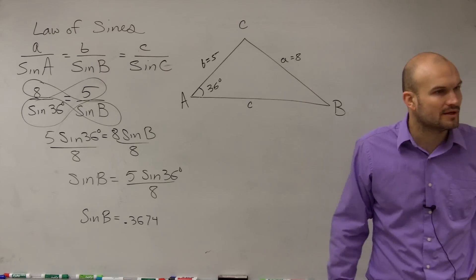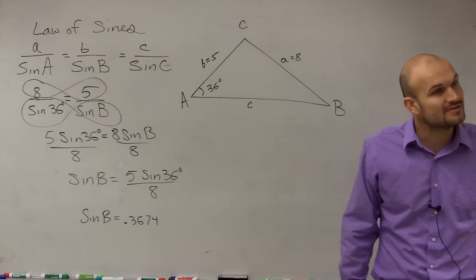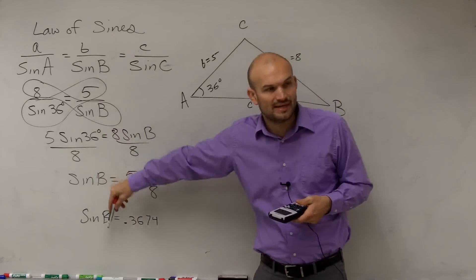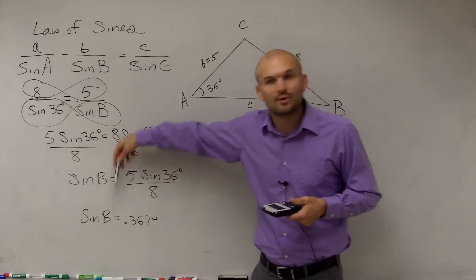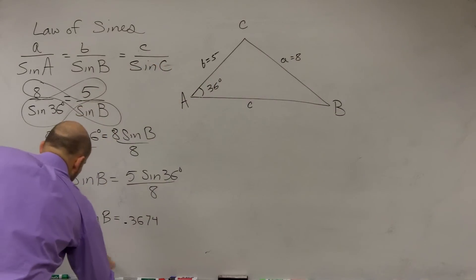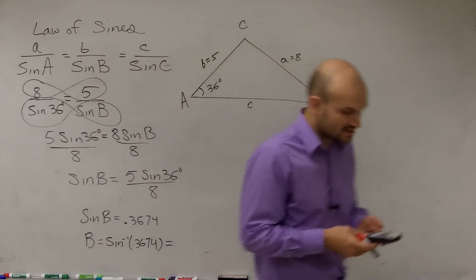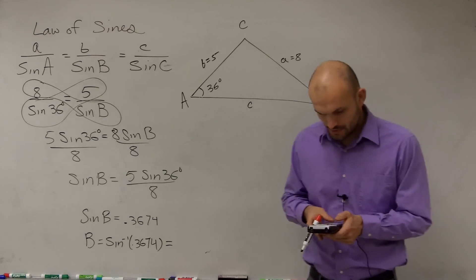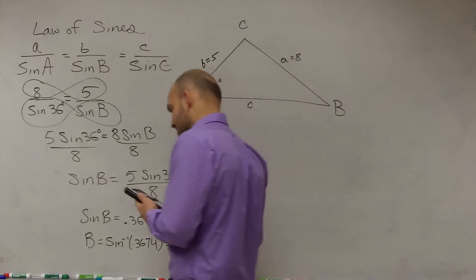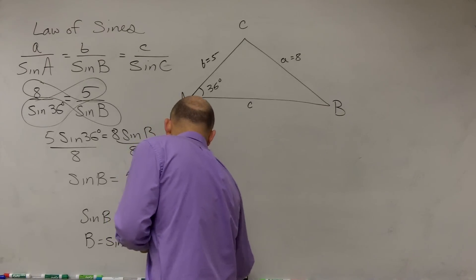Now, we still haven't found B, though. Does anybody remember what we do at this stage to go and find the value of B? Yeah, you've got to use the inverse of this function. So you're going to take this value, and now to find B, this says the sine of this angle B equals 0.3674. So what does B equal? Well, B equals the inverse sine. B equals sine inverse of 0.3674. So now we've got to take the inverse sine of this value.